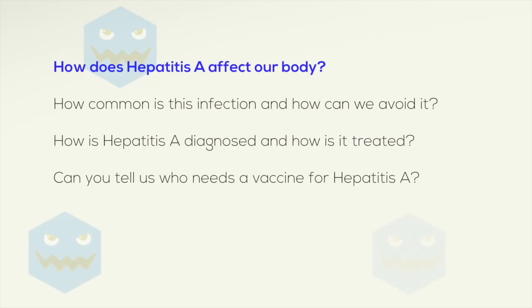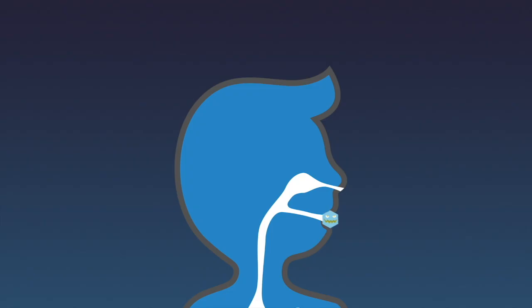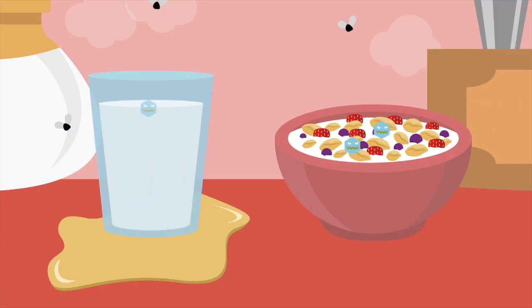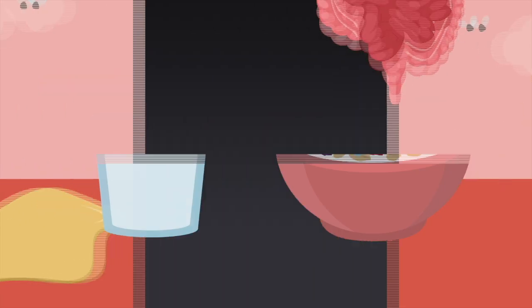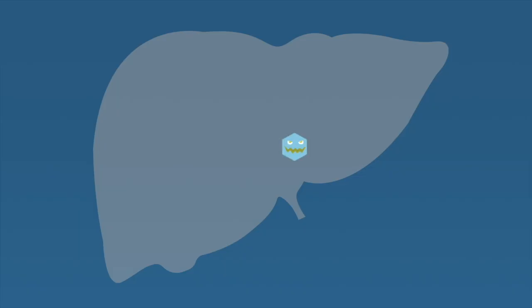Dr. A, how does hepatitis A affect our body? Hepatitis A is caused by a virus that enters the body through our mouth when we drink water or eat food that is contaminated with virus. Once inside the body, the virus travels from our intestines to blood and ends up in the liver.